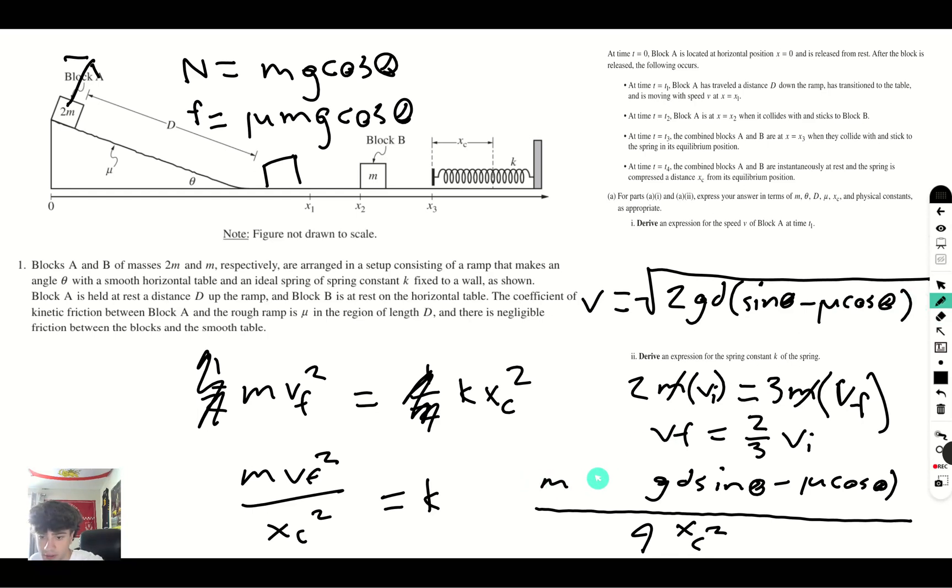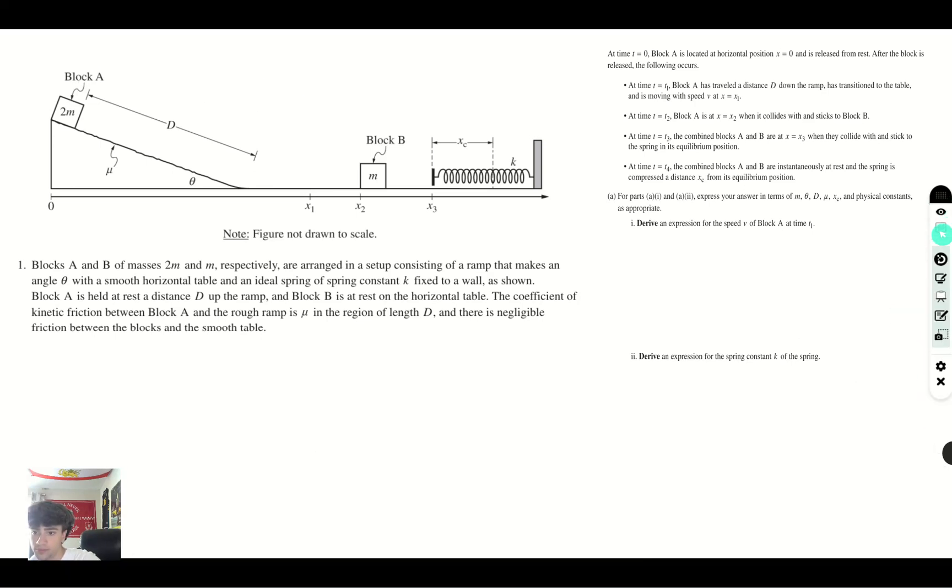From here, and I'm going to move the m in front of the 8, or behind the 8. So from here, we get that the k spring coefficient of friction is going to be 8mgd sine theta minus mu cosine theta, end parentheses, all over 9xc squared. That's how you solve part A of this problem. Now let's go to the next part.